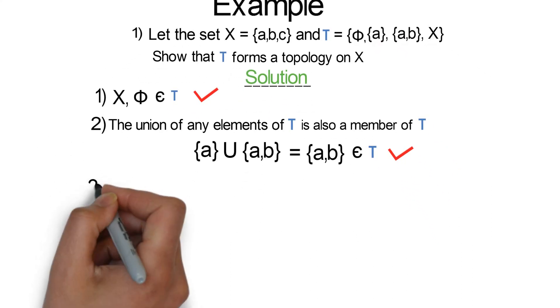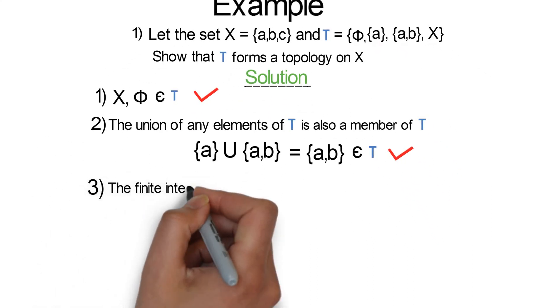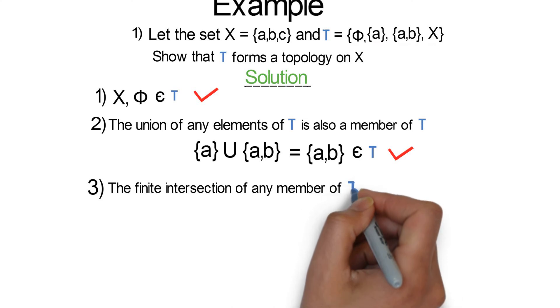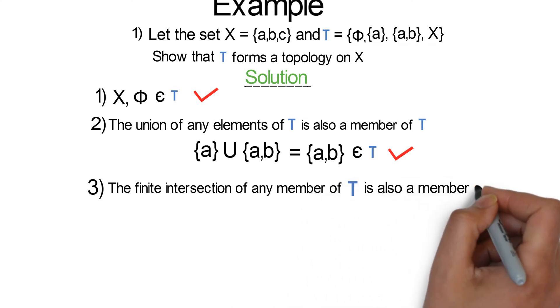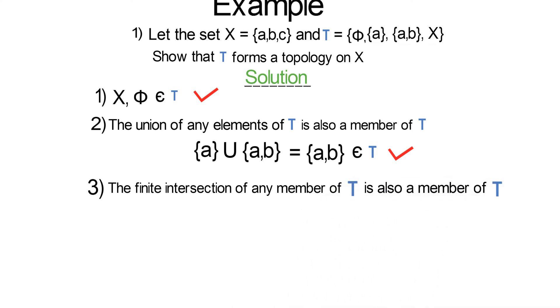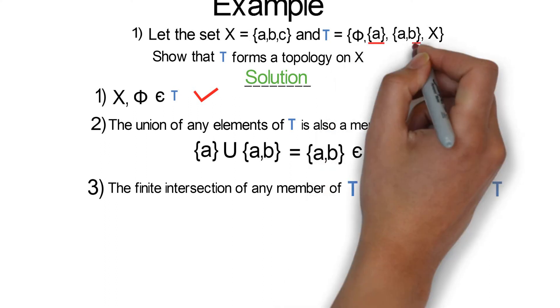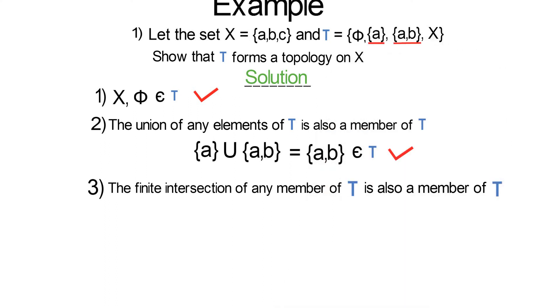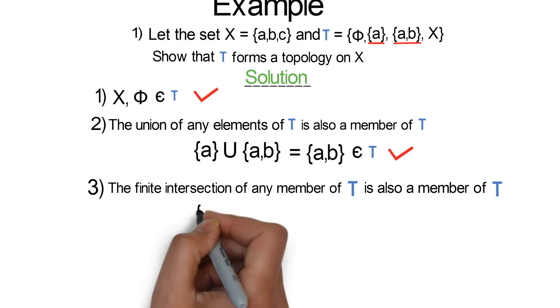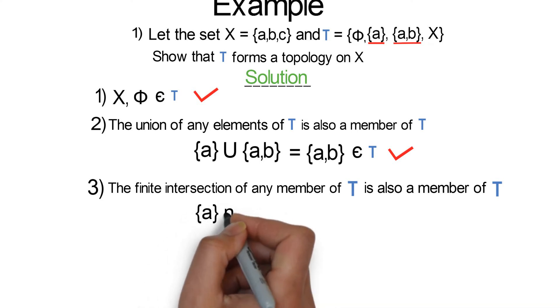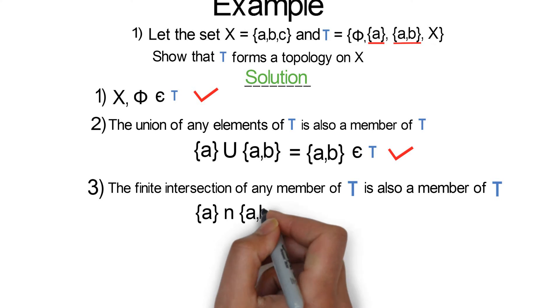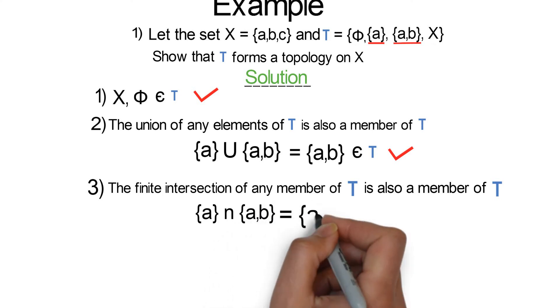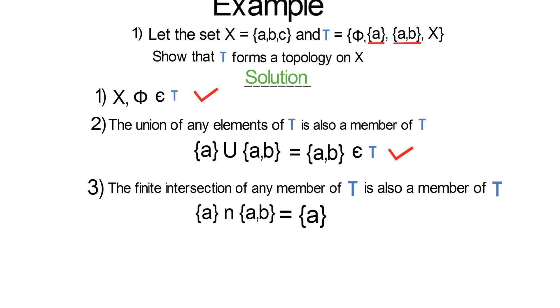What about condition 3? We say that the finite intersection of any member of tau is also a member of tau. So let's take two elements of tau and find their intersection. Finding the intersection of the singleton set {a} and the set {a,b}, we have the singleton set {a} which is also a member of tau. So condition 3 also holds.